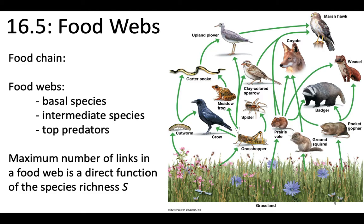Food webs are also really important for understanding community ecology and community structure. First, let's differentiate between a food chain and a food web. A food chain is just an abstract representation of feeding relationships within a community — a one-to-one graph: this animal eats this, then this animal eats that. In contrast, food webs are highly interwoven networks, not just one-to-one species relationships. In food webs you're going to have basal species — in this community that would be the grasses being fed upon — and intermediate species eating the grass.